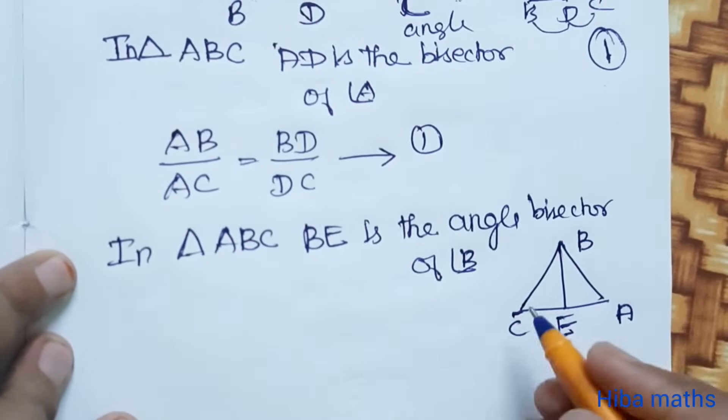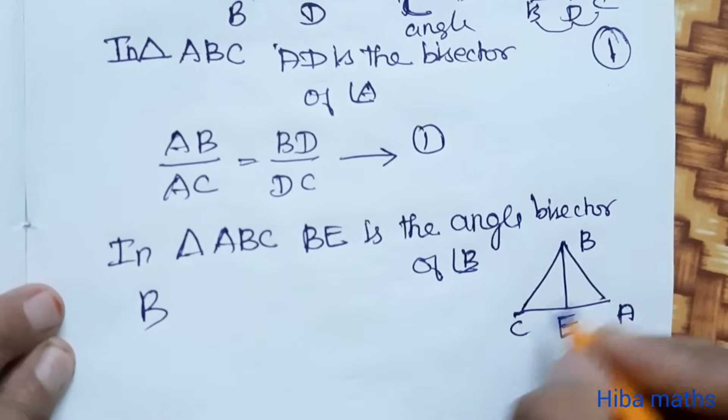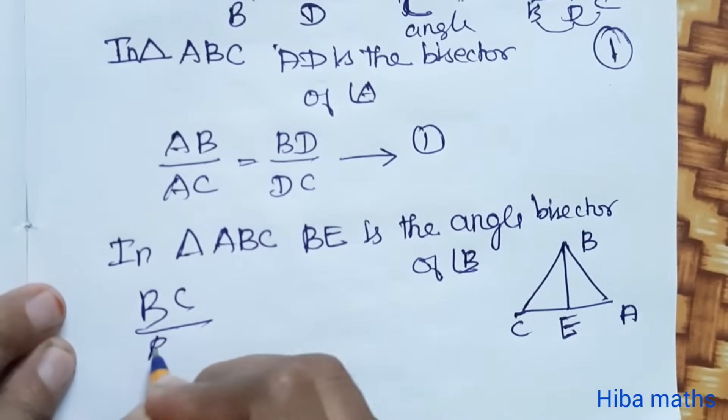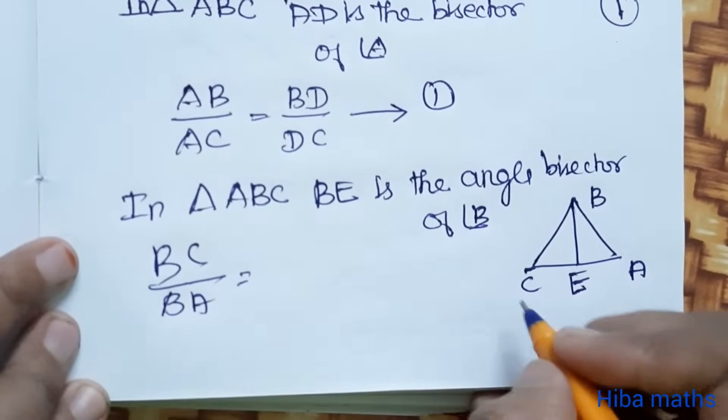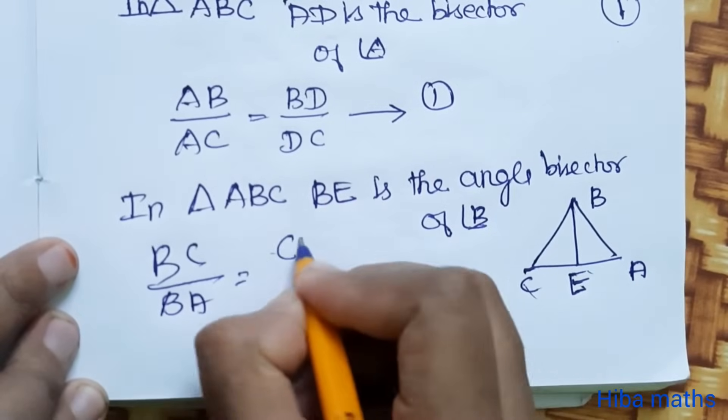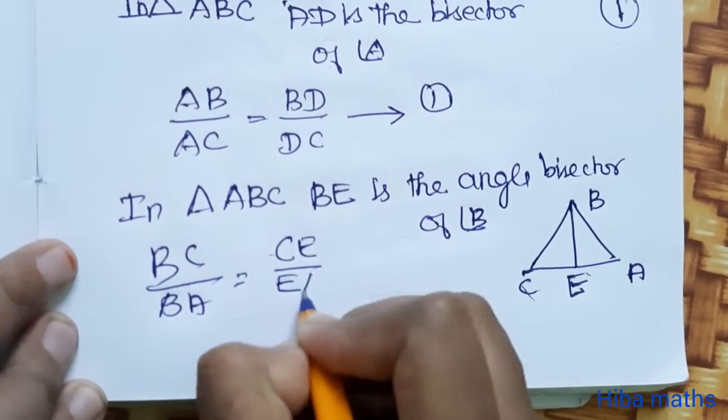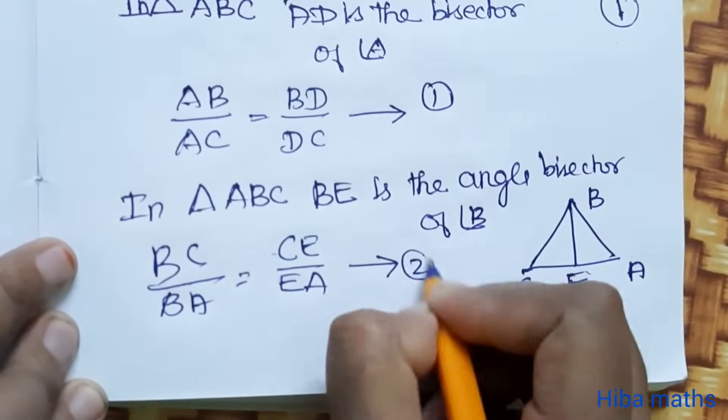Angle bisector theorem: BC/BA = CE/EA. This is equation 2.